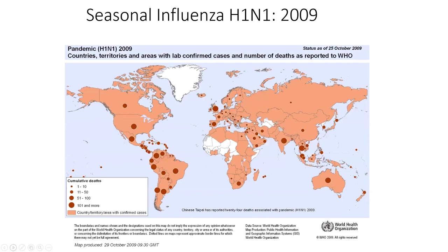H1N1, or the swine flu of 2009, spread very quickly after emerging — the source of infection is not definitely known — and caused a major pandemic in 2009. Now this H1N1-2009 strain is part of our seasonal influenza strains and is routinely detected.